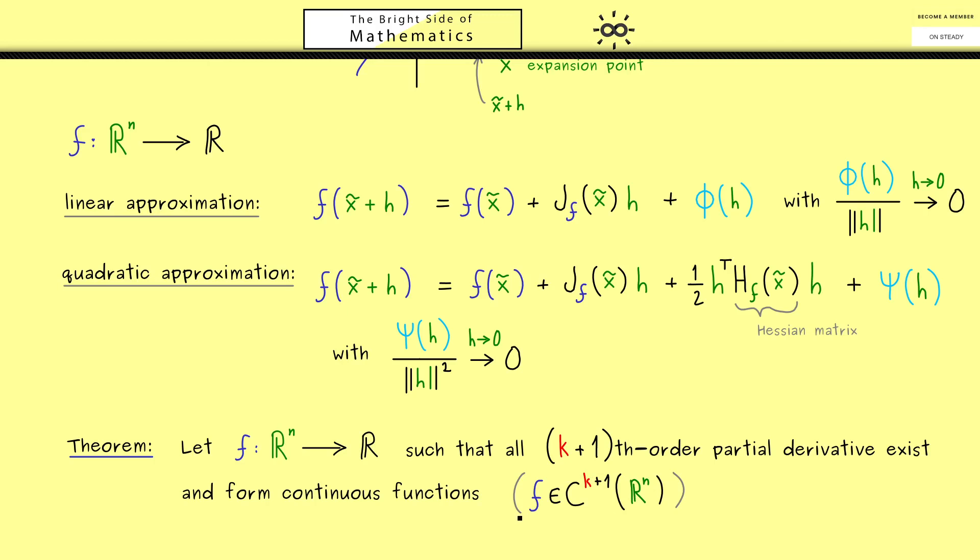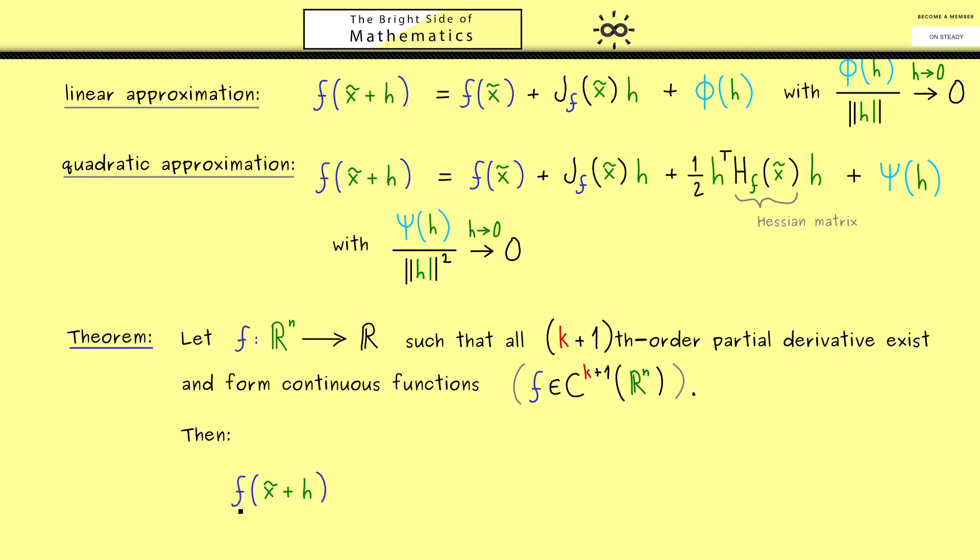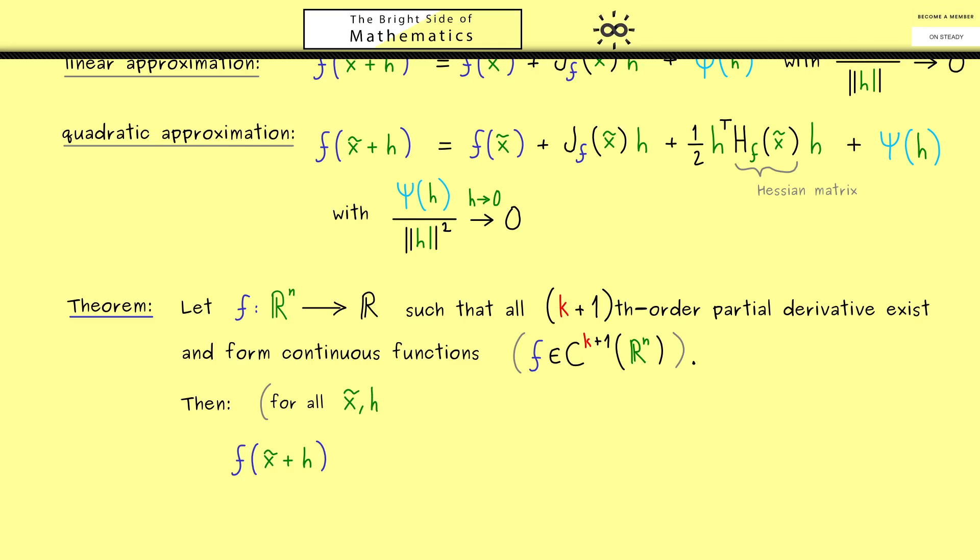Ok, by having this, we are ready to write down the formulation for Taylor's theorem. Now, with respect to what we have said before, we can summarize the result by saying, we have an approximation with a polynomial of kth order. Therefore, we also consider f(x tilde + h). And of course, here x tilde and h are elements of R^n. In addition, we still call x tilde our expansion point.